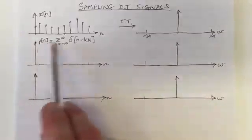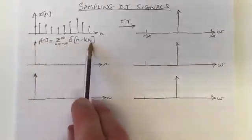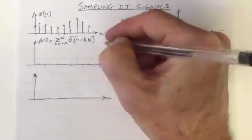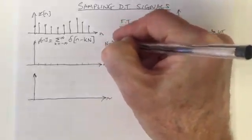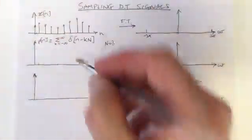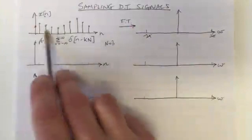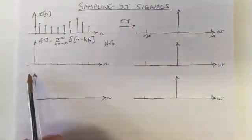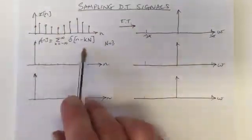So what is this function here? It's a sum of delta functions, each one shifted by k times capital N. So let's do an example when capital N equals 3. So that means we're only going to keep every third sample from our original signal. And one way to do that is we set all the other ones equal to 0, and we do that by multiplying.